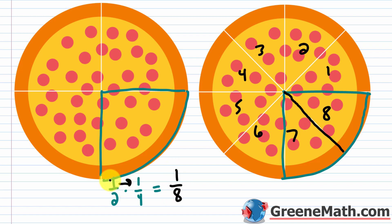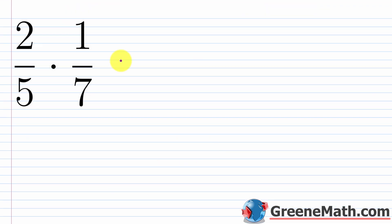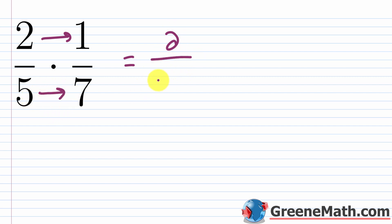The procedure is: multiply the numerators together, place the result over the product of the denominators. For example, two-fifths times one-seventh: two times one equals two in the numerator, five times seven equals 35 in the denominator. Since two is prime and 35 is five times seven, the GCF is one, so the simplified answer is two over 35.